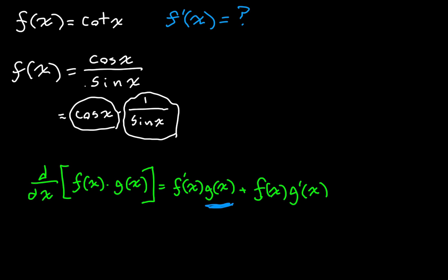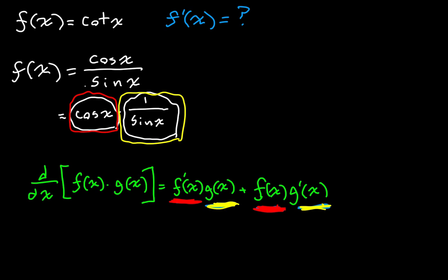We know the second function and we know the first function. What we need to know is the derivative of the first function and the derivative of the second function. I'm going to color code these: the red will be my first function and the yellow will be my second function. So the second function is going to be 1 over sine of x, and our first function is going to be cosine of x. Let's get to work on actually finding out what those derivatives are. So, f of x is equal to cosine of x, and g of x is equal to 1 over sine of x.